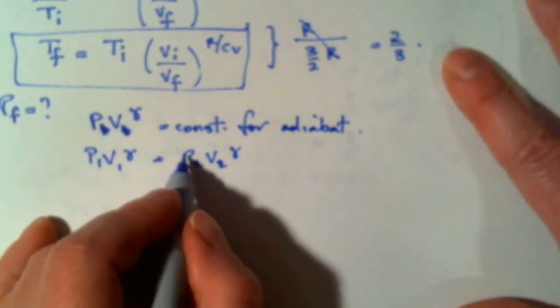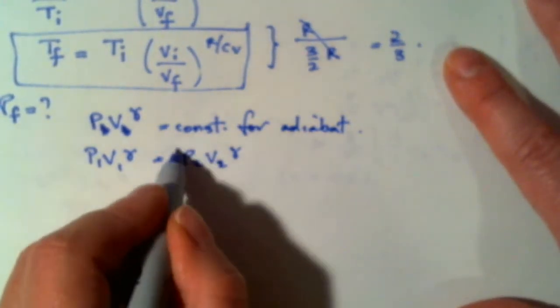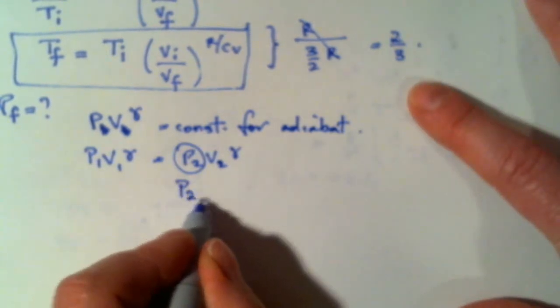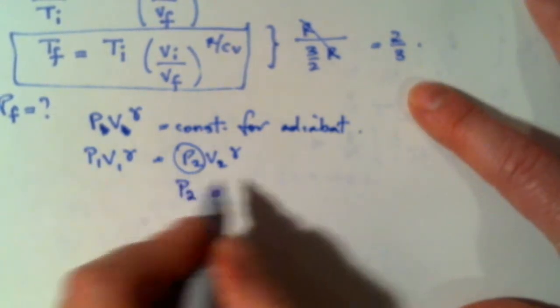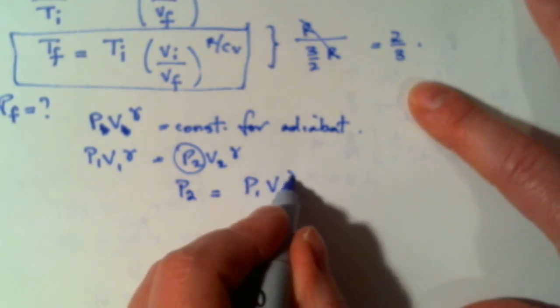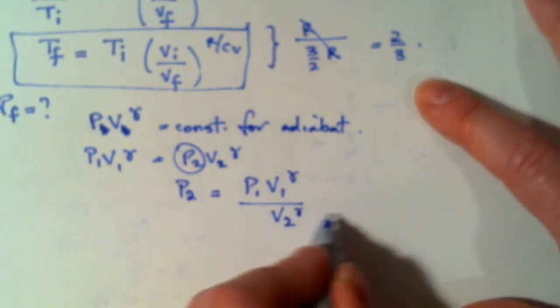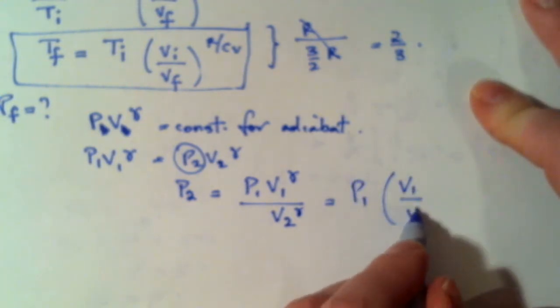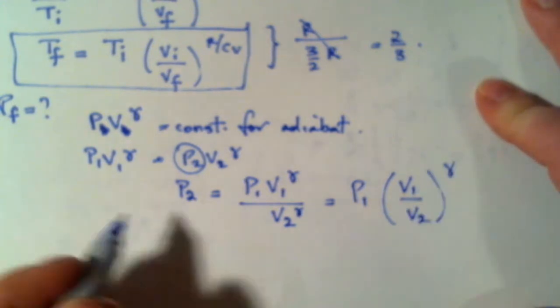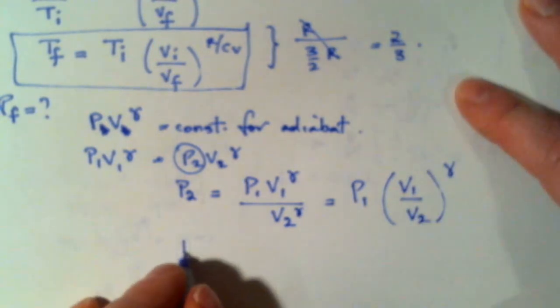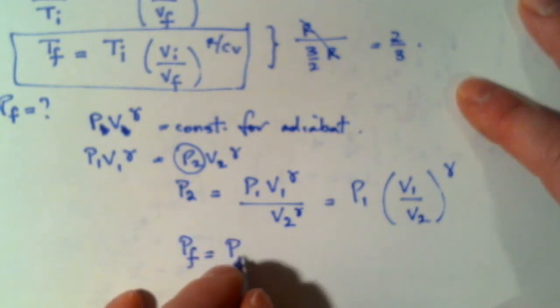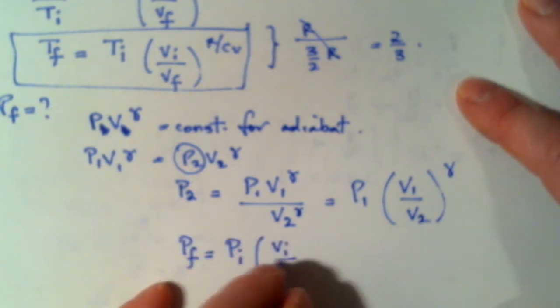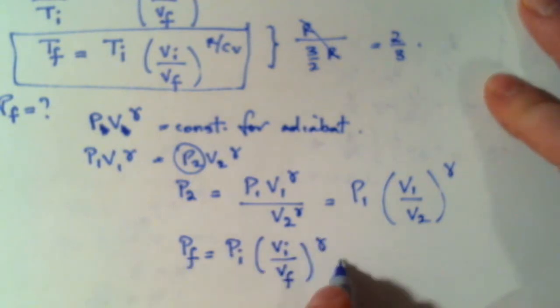So I can isolate for p2 or p final. And so p2, which is p final, is equal to p1 v1 gamma divided by v2 gamma. And so that's equal to p1 v1 over v2 raised to the gamma. And if you like final and initial instead, then the formula for p final is p initial v initial over v final gamma, where gamma is cp over cv.